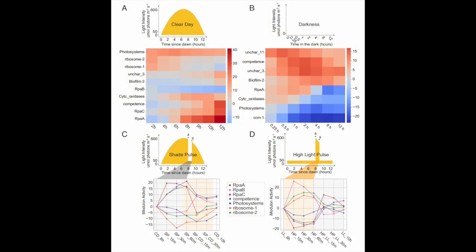The second result I want to highlight is how changes in imodulon activities can reveal the cell's dynamic response to environmental variations. S. elongatus has a circadian rhythm and its gene regulation fluctuates with changes in light intensity. We have in our data collection samples from different light conditions, such as light intensity that mimics natural daylight from 0 to 12 hours and complete darkness that mimics the night, and also light variations such as sudden light pulse or sudden shade pulse. We identified several imodulons that are most responsive to changes in light intensity, and their activity profiles demonstrate the cell's dynamic response to changing light.